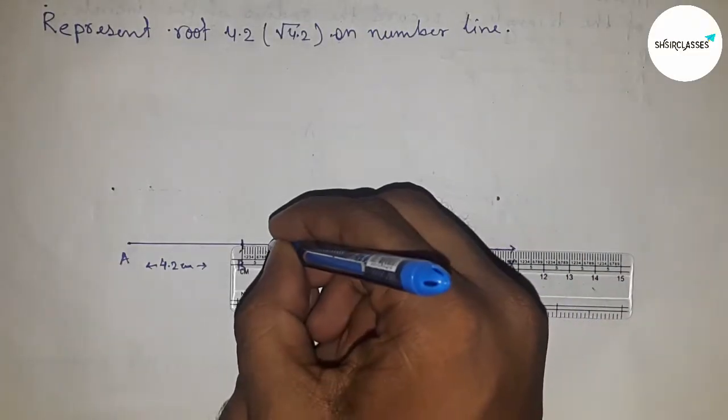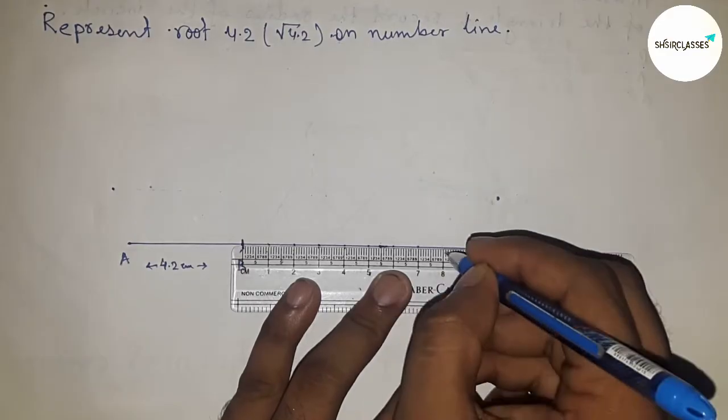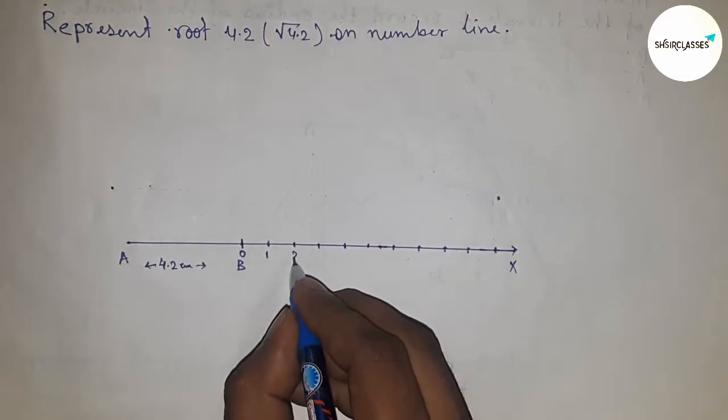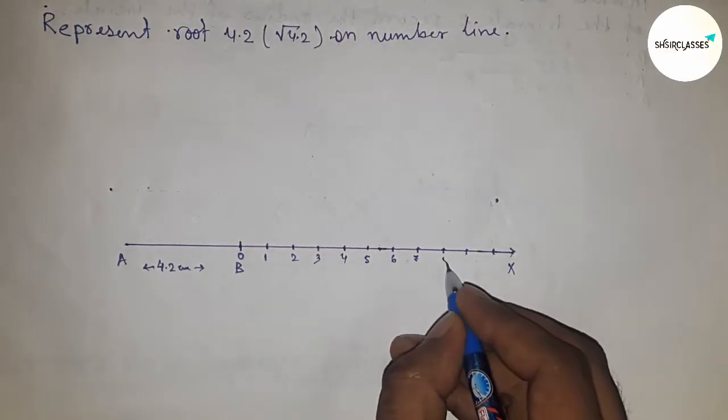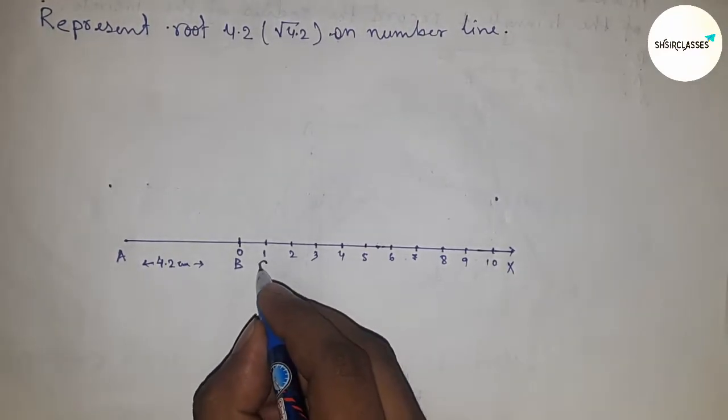Next, mark the line from B to X. Mark all the numbers on the point BX. So this is 0, 1, 2, 3, 4, 5, 6, 7, 8, 9, 10 and so on. Next, this is point C.